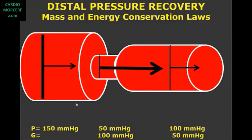Another important thing to know is the so-called distal pressure recovery that occurs mainly in prosthetic aortic valves. The left ventricular aortic pressure gradient obtained by hemodynamics is always less than that obtained by Doppler. This occurs due to two reasons. As explained in a past video class, the gradient seen by Doppler is the one corresponding to the vena contracta.